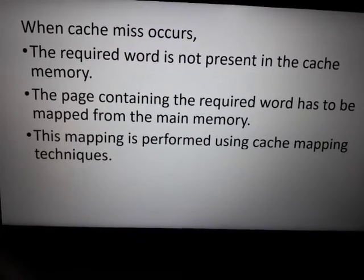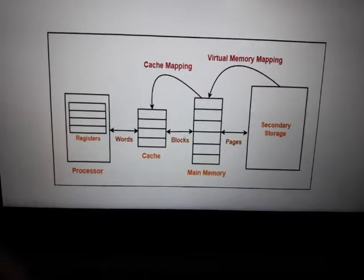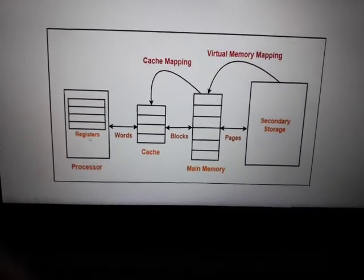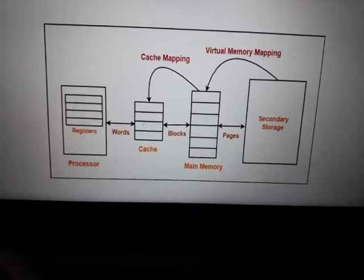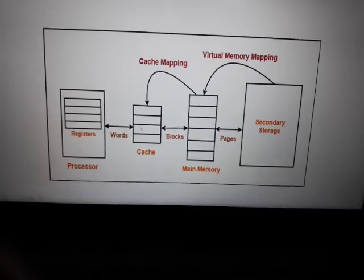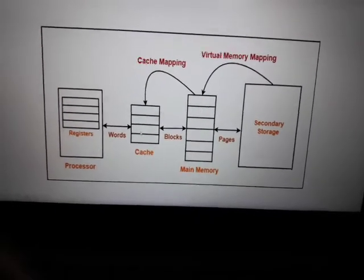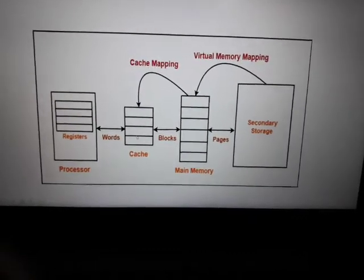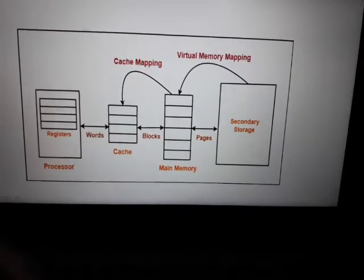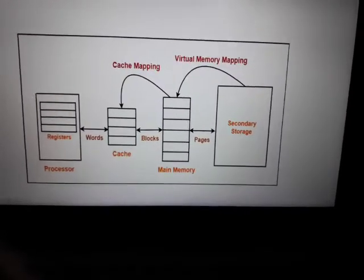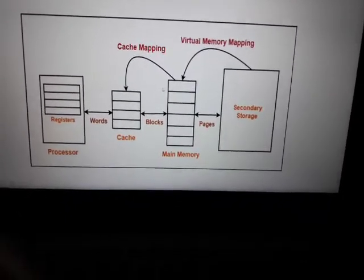Data mapping is performed using cache memory techniques. The hierarchy is: CPU, cache memory, main memory, and secondary storage. The processor requests a word in main memory; it is searched first in cache memory — cache hit if found, cache miss if not. On a cache miss, the required word is fetched from main memory into cache — that is called cache mapping. When secondary storage maps to main memory, it is called virtual memory mapping. In this session, we discuss cache mapping techniques.